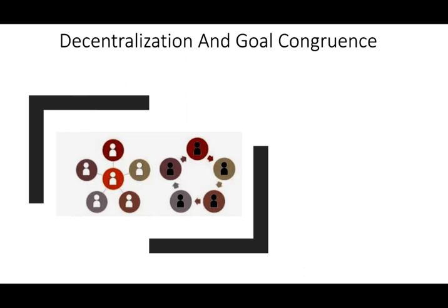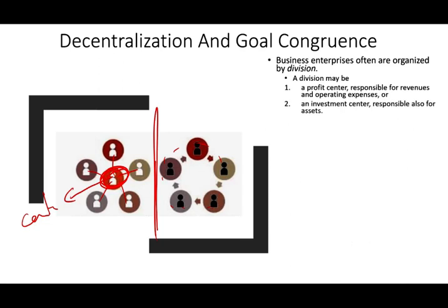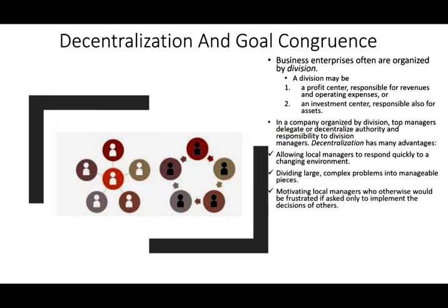Another related topic is the concept of decentralization and goal congruence. Decentralization is when you give various companies the ability to negotiate prices among themselves, versus centralization, where one center — like the parent company — tells everyone what to do. Business enterprises are often organized by division, which could be a profit center responsible for revenues and expenses, or an investment center responsible only for assets. In a company organized by division, top managers delegate or decentralize authority and responsibility to the divisions, allowing local managers to make their own decisions. This motivates local managers on the front line to respond quickly to a changing environment.